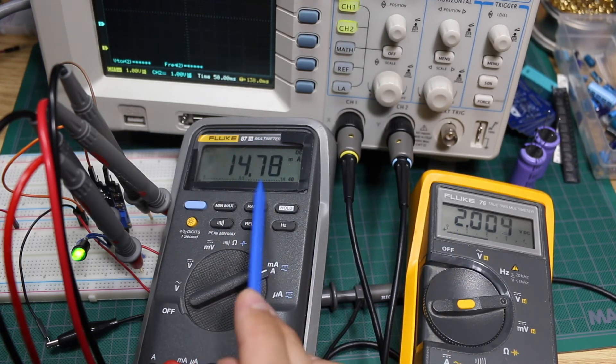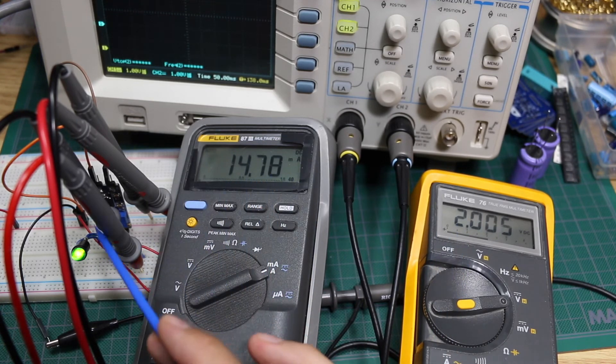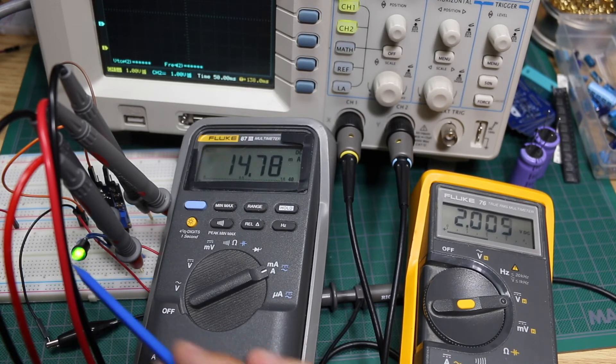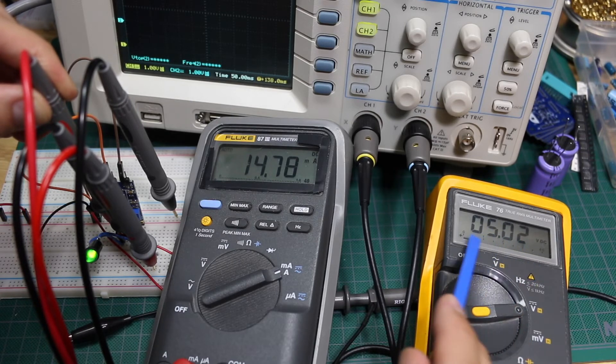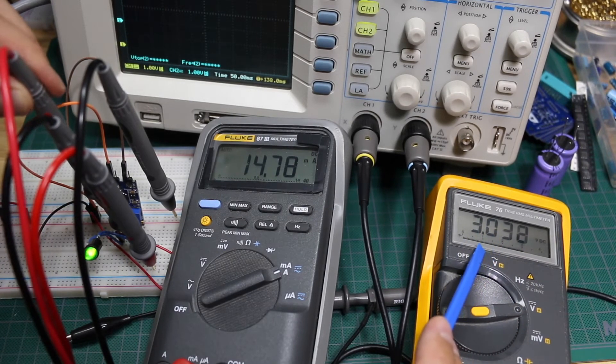And the voltage on the output of the converter is fixed at 5 volts. So if I bring the input back up to 3, now I'll move the ammeter.